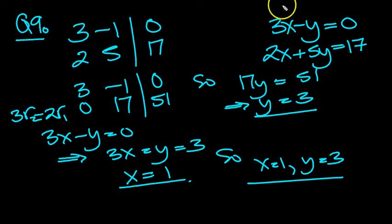So let's just check that then, 1 and 3. 3 take 3 is 0, 2 plus 15 is 17. Yeah, that's fine. That's 9 done.